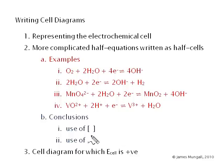So we'll conclude by answering how you use the square brackets and how you use a comma in our half equation with these more complicated ones. And then the next tutorial will be the cell diagram for when E cell is positive.